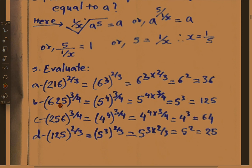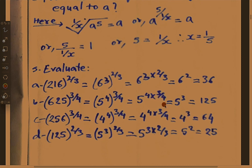B number: 625 whole power 3 upon 4. Since 625 equals 5 power 4, we write 5 power 4 whole power 3 upon 4. Multiplying the powers: 4 into 3 upon 4 — the 4s cancel — equals 5 power 3, which equals 125.